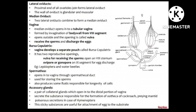The next topic is the lateral oviduct. The proximal ends of all ovules join to form the lateral oviduct; its wall is glandular or muscular. Next is the median oviduct, which is formed by the union of two lateral oviducts. The vagina is defined as an invagination of the body wall from the 8th segment. It opens outside and the opening is called the vulva, which can be seen in the picture. The vagina receives sperm and discharges eggs.